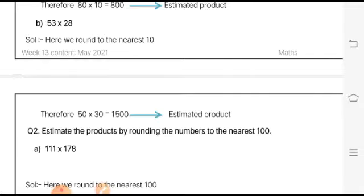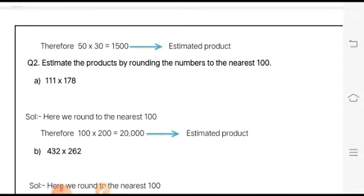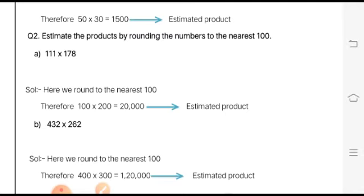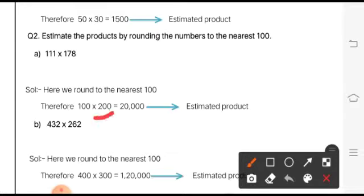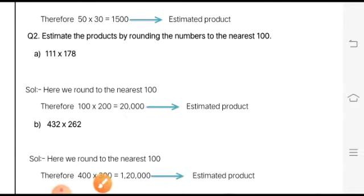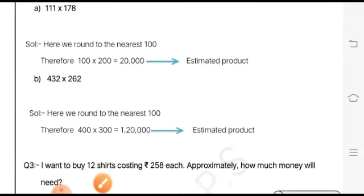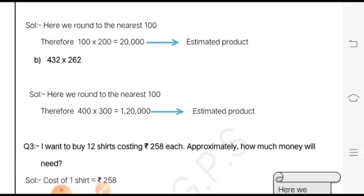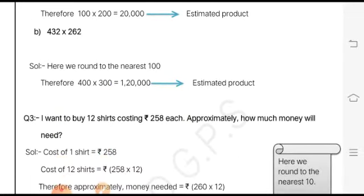Second question is: estimate the products by rounding the numbers to the nearest hundreds. Here you have to round all the numbers to the nearest hundreds. 111 into 178 - 111 is rounded down to 100 and 178 is rounded up to 200, so the overall product 20,000 is the estimated product. Next we have 432 into 264. Likewise, you have to solve all the parts.